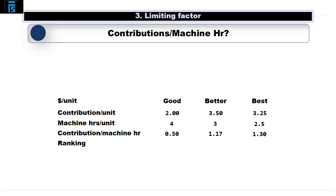Based on these figures we can now see that the product that makes the best use of the available machine hours is the Best, so we will want to make as many of these as we can before moving on to making Betters, which generate the next best contribution per machine hour, and then finally we can use up any remaining hours making Goods, which generate the lowest contribution per machine hour.